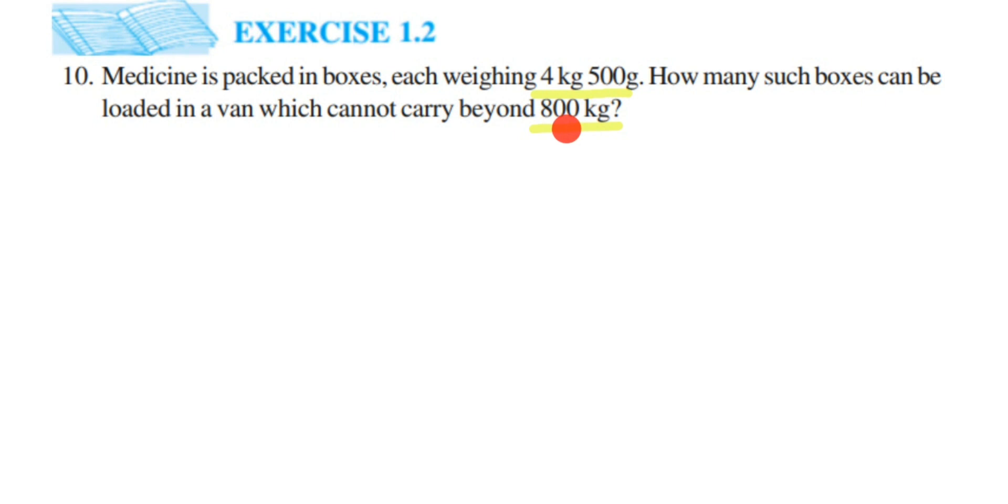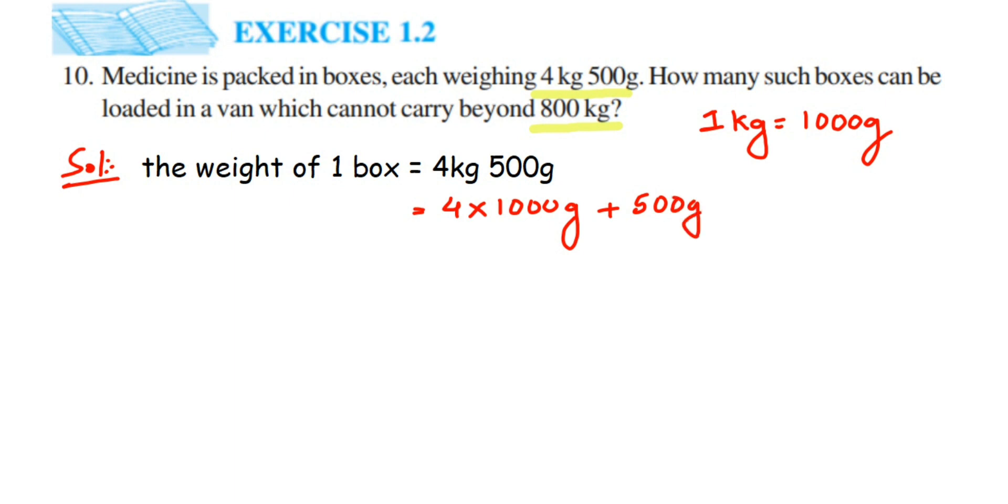Here is the solution. First, we're going to convert this. The weight of one box is equal to 4 kg and 500 grams. We're going to convert this completely into grams. We know that 1 kg is equal to 1000 grams, right? So 4 kg is nothing but 4 into 1000 grams, plus we have this 500 grams. So this will be 4000 grams plus 500 grams, so this will be equal to 4500 grams.